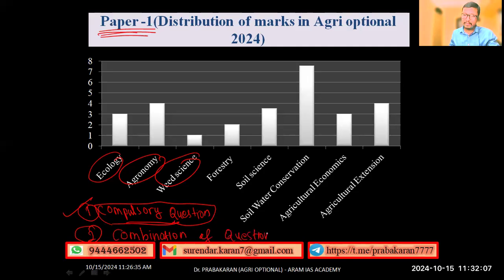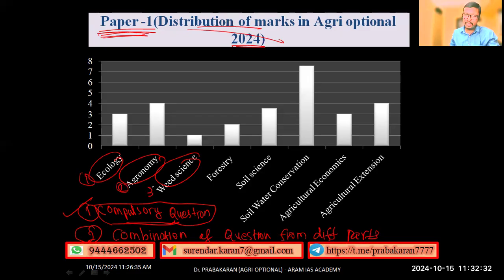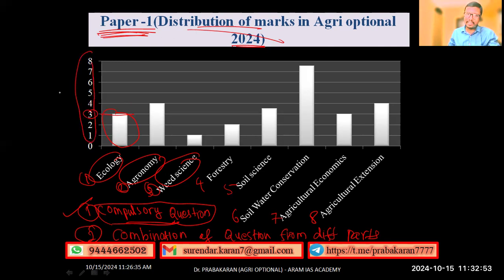I'm giving this overview just to have a rough idea of which subject was given more importance and which subject was given least importance in Agriculture Optional. Paper 1 consists of around eight subjects. In the chart, the Y-axis denotes the number of questions and the X-axis denotes the list of subjects.